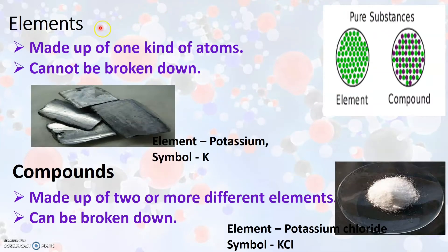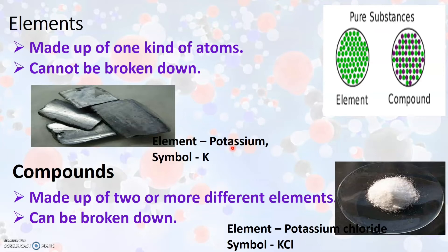Now let us see what elements, compounds and mixtures are. Elements are made up of one kind of atom, or identical atoms. As you see here, an element is made up of only one kind of atom, and it cannot be broken down. This is an example of the element potassium, which consists of only potassium particles — it is made up of one kind of atom.